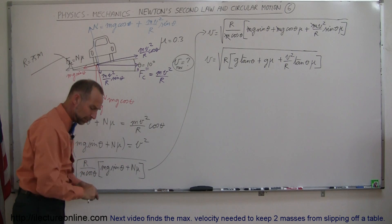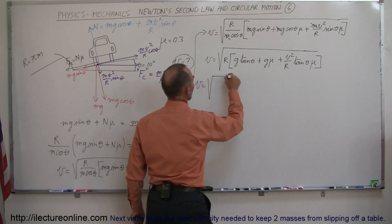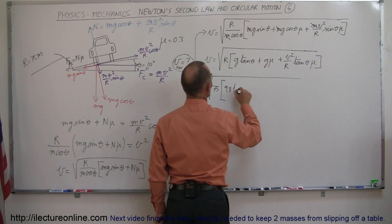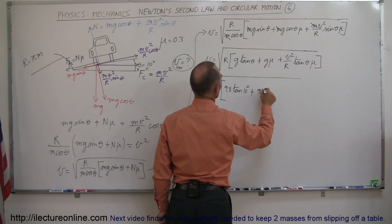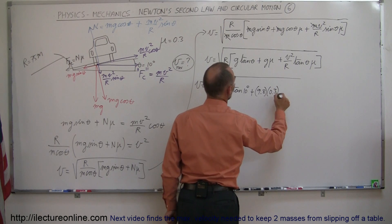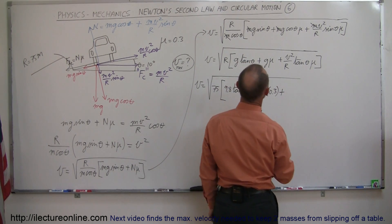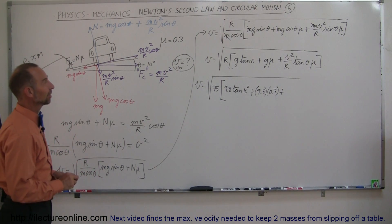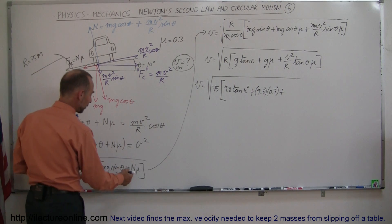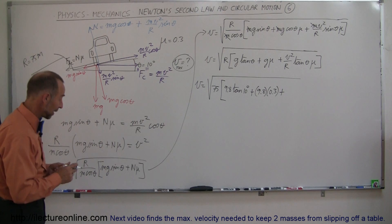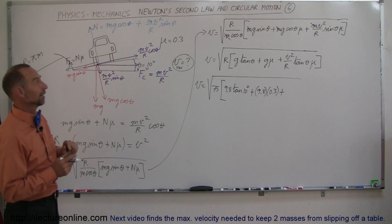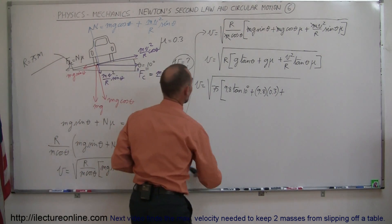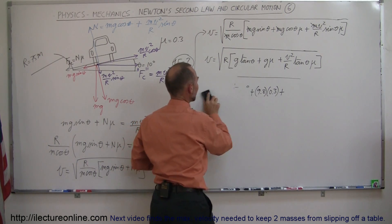Now let's plug in all the numbers: V equals the square root of 75 times 9.8 times tangent of 10 degrees, plus 9.8 times mu (0.3), plus v²... wait — there's a complication. The normal force contains a velocity term, which means I have to solve for that velocity term before I can proceed. That's what I get for being a little lazy.